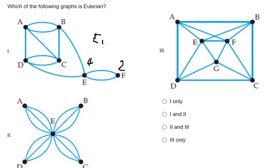So this one we have four, this one we have number four, this one we have number four, and this one we have number four. So we can say that this one is an Eulerian graph.